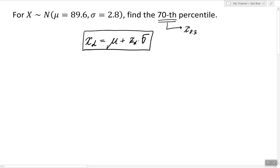Therefore the 70th percentile for this given random variable is the same as x.3, and to find it we're going to use this formula: mu plus z.3 times sigma. Mu is 89.6, z.3 we're going to find, and sigma is 2.8.